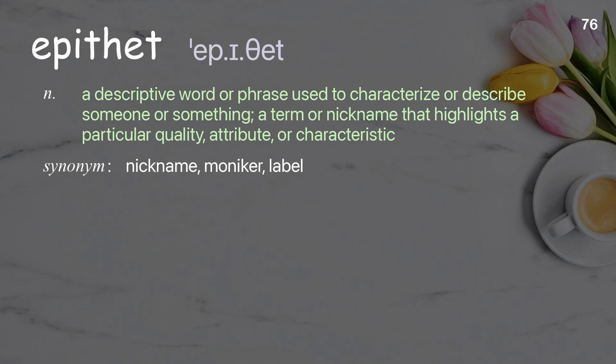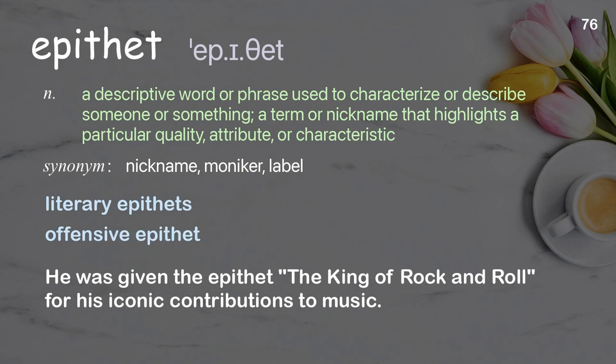Epithet: a descriptive word or phrase used to characterize or describe someone or something; a term or nickname that highlights a particular quality, attribute, or characteristic. Examples: literary epithets; offensive epithet. He was given the epithet 'The King of Rock and Roll' for his iconic contributions to music.